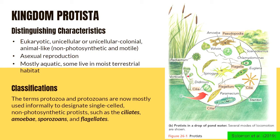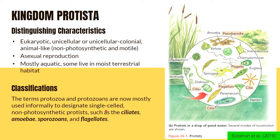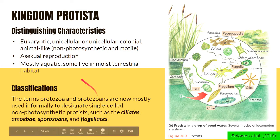The terms protozoa and protozoans are now mostly used informally to designate animal-like, single-celled, non-photosynthetic protists, such as ciliates, amoeba, protozoans, and flagellates. They are mostly aquatic, mostly unicellular, but eukaryotic organisms.